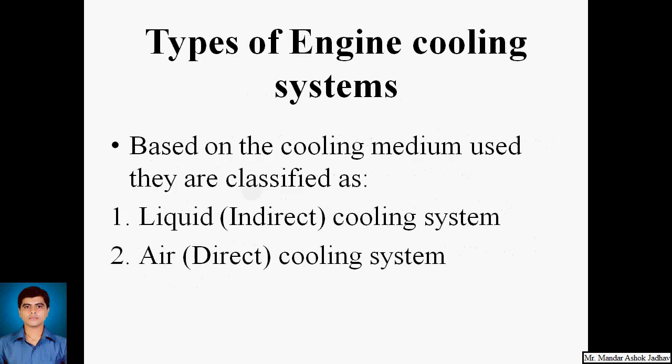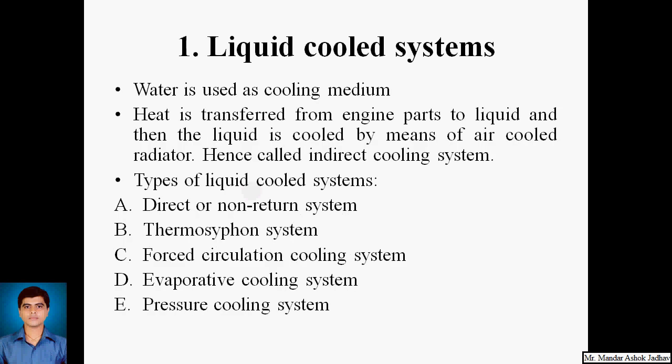There are two types of cooling systems based on which cooling medium is used: the liquid cooling system, also called the indirect cooling system, and the air cooling system, also called the direct cooling system. Let us discuss these systems in detail. In the liquid cooling system, mainly water is used and made to circulate through the jackets provided around the cylinder, cylinder head, wall ports, and seats, where it extracts most of the heat.